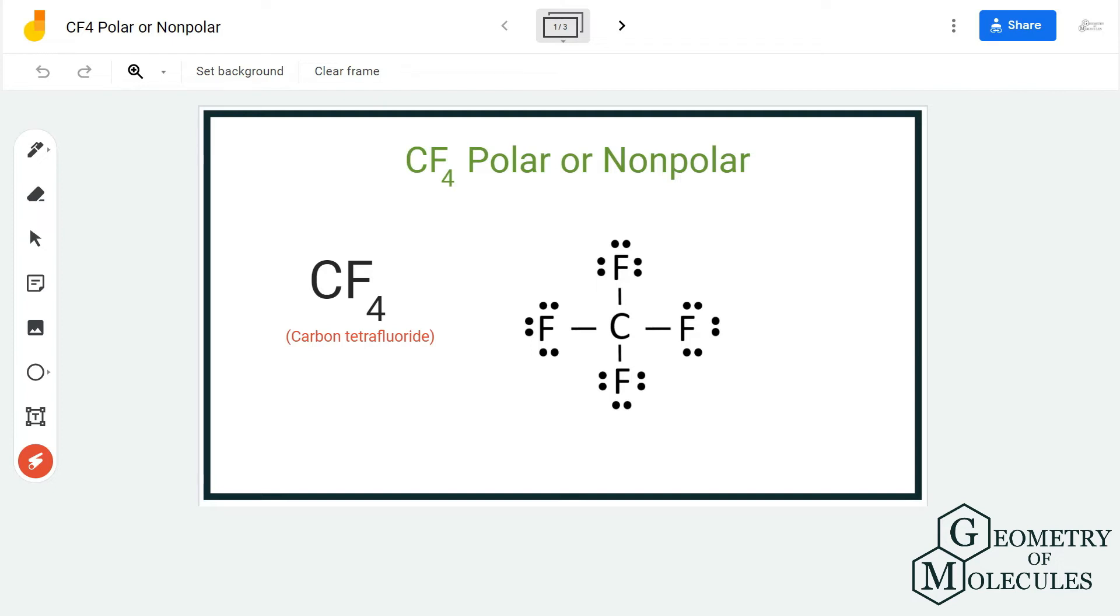Here if you look at this 3D shape, you can see that all the fluorine atoms are arranged in opposite directions to each other. Now here, fluorine atom is more electronegative than carbon atom.